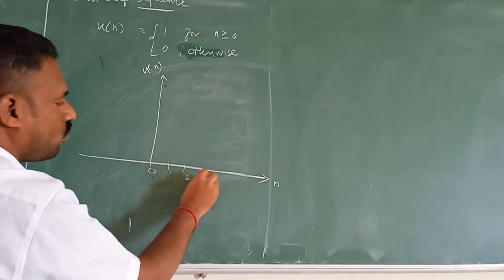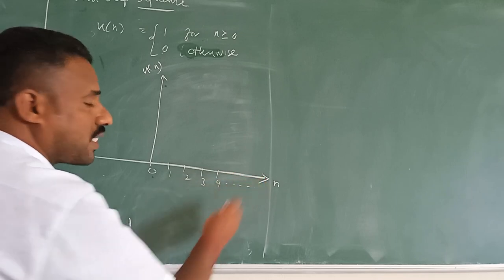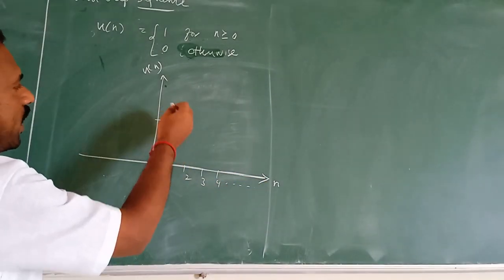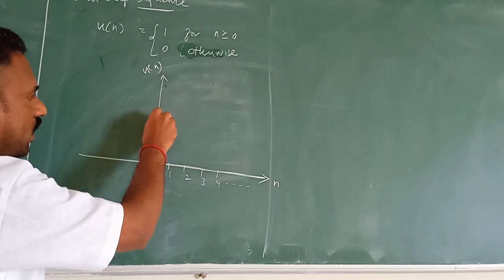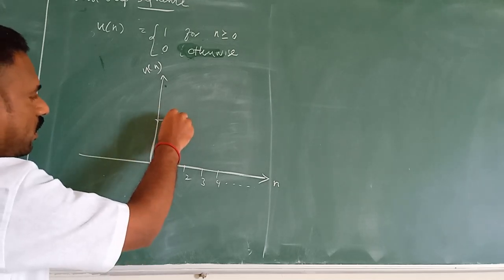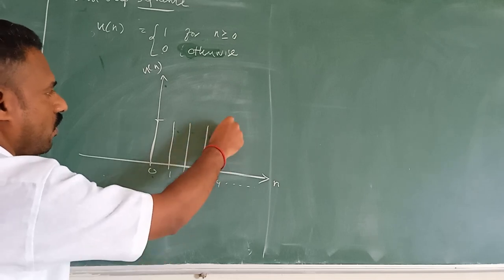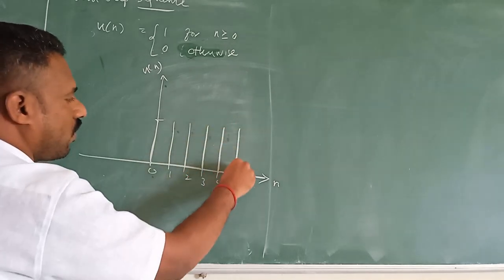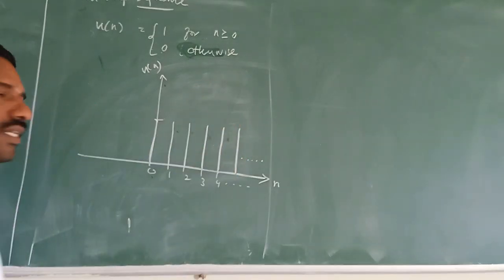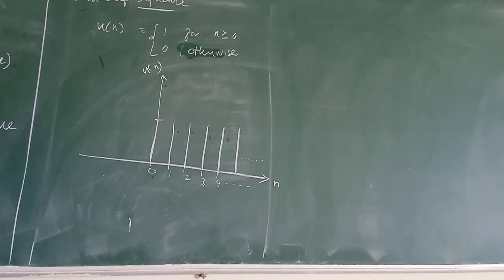One, two, three, four, and so on. For these values, the amplitude is one. So this is the unit step sequence.